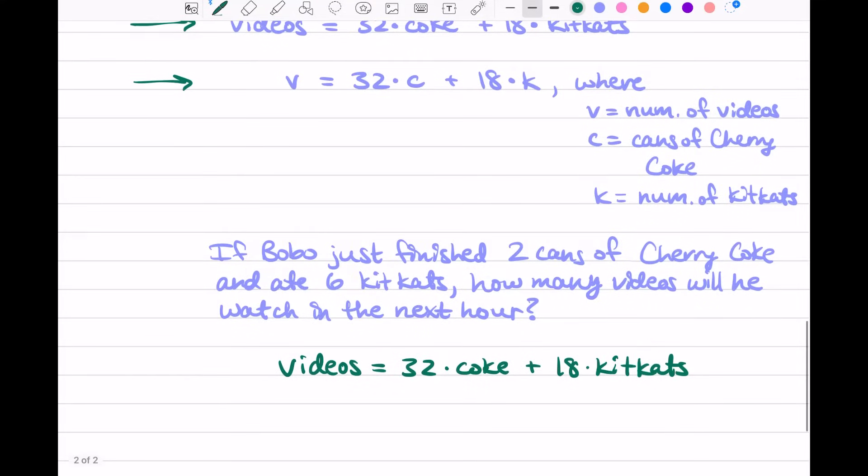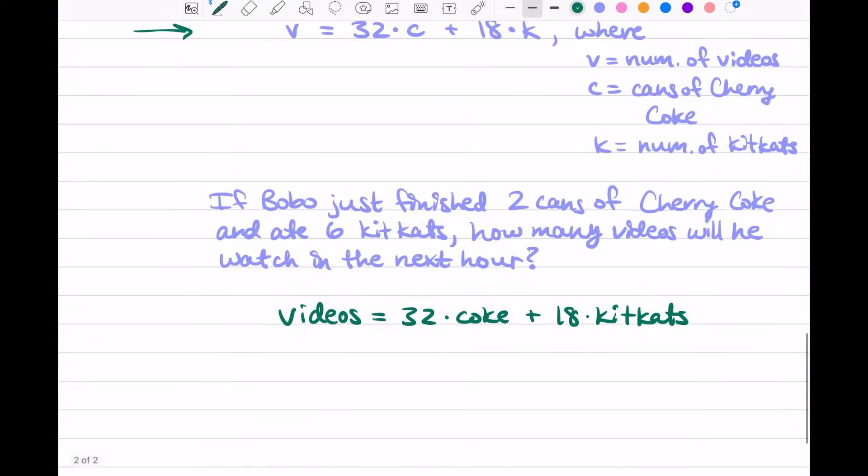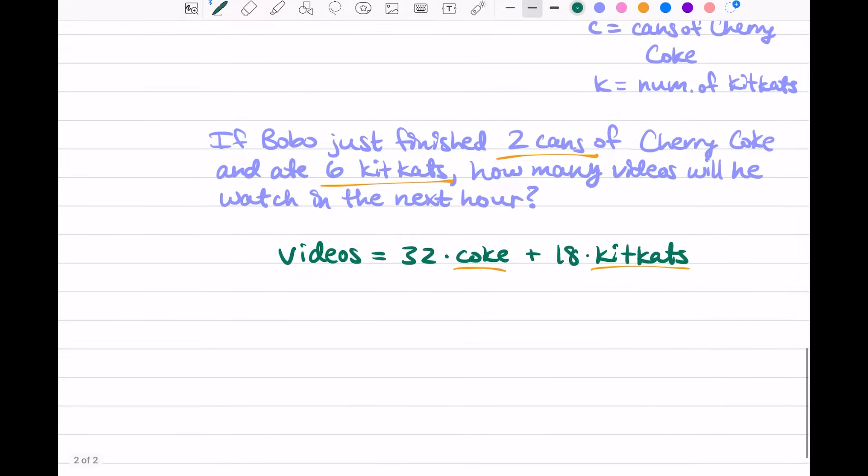So instead of these variables, these letters, we wrote the full word, but you can still consider videos, Coke, Kit Kats—you can still consider them variables, just numbers in disguise. So we know that to find the number of videos he watches in the next hour, we need to know the number of Cokes he drinks and the number of Kit Kats he eats. Well, we know in the question that he just had two cans of Cherry Coke and six Kit Kats. So we know what the number in disguise is. We know what's under the mask. For Cokes, it's 2. For Kit Kats, it's 6. So we can substitute those numbers in.